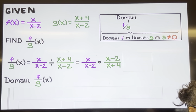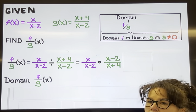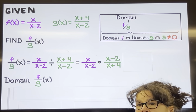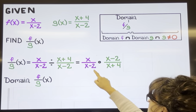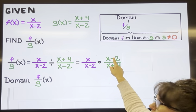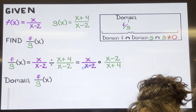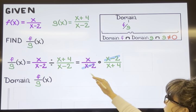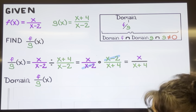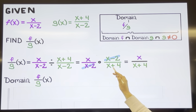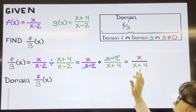When multiplying fractions we multiply across, but before we do that we can cancel any numerator with any denominator. The (x minus 2) in this denominator and the (x minus 2) in that numerator cancel. So multiplying straight across, all I have left is x in the numerator and x plus 4 in the denominator.